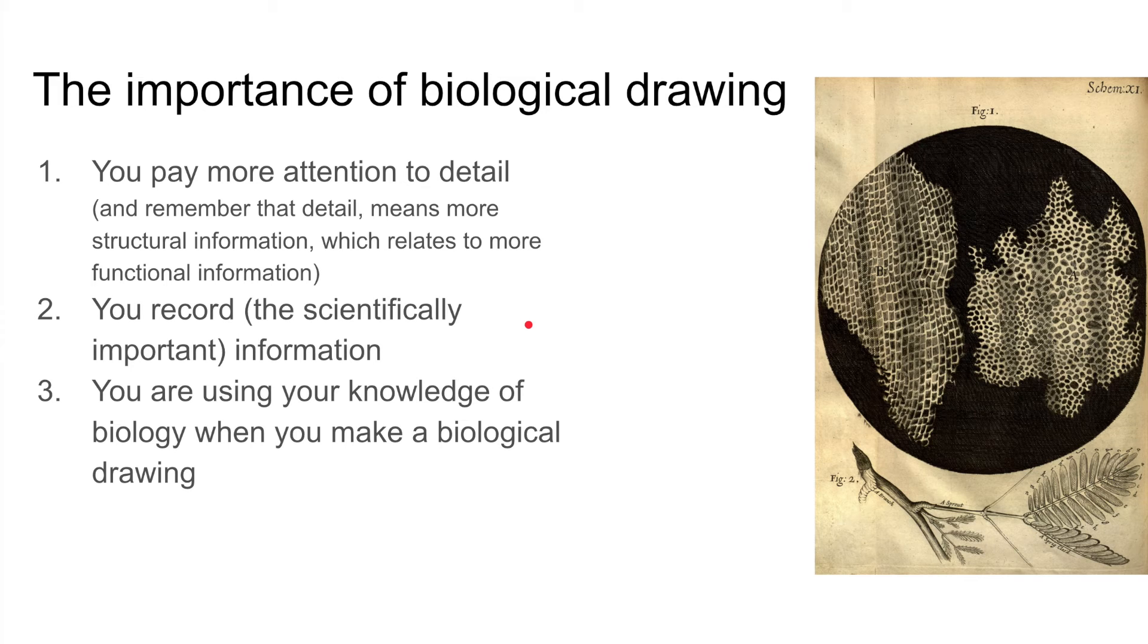Number three, and this is the most important thing for me: biological drawing demonstrates that you have an inherent understanding and knowledge of the structures you're looking at. When you're drawing something, and I know this disagrees with what OCR might say in their guidance, I believe it's not only your responsibility to draw what you see, but to draw what you see in the light of, or through the lens of, the knowledge of the structure that you already have. So you know what the structure of a leaf should be, so when you look down the microscope at actual leaf tissue, you're looking for certain structures already.